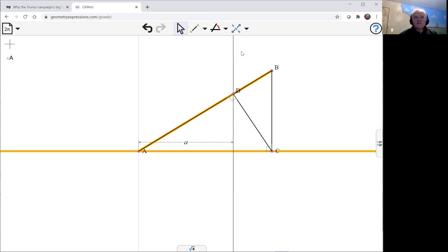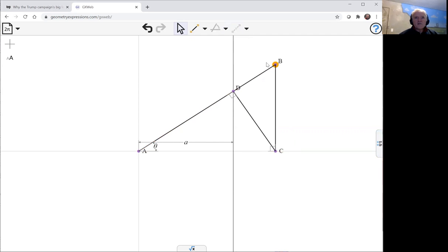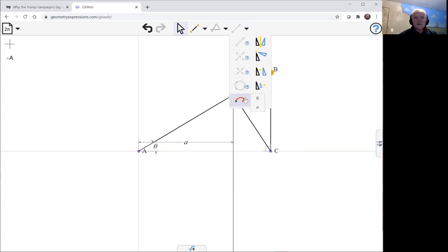If we drive it with an angle theta here, let me see what our mechanism is going to do. Something like that. Point B draws the curve.